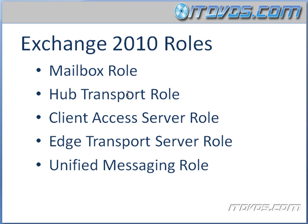Next is the hub transport role. This role controls the routing of emails — it handles sending and receiving, and is responsible for getting an email to its final destination, which is either a mail server on the internet or one of our mailbox servers.